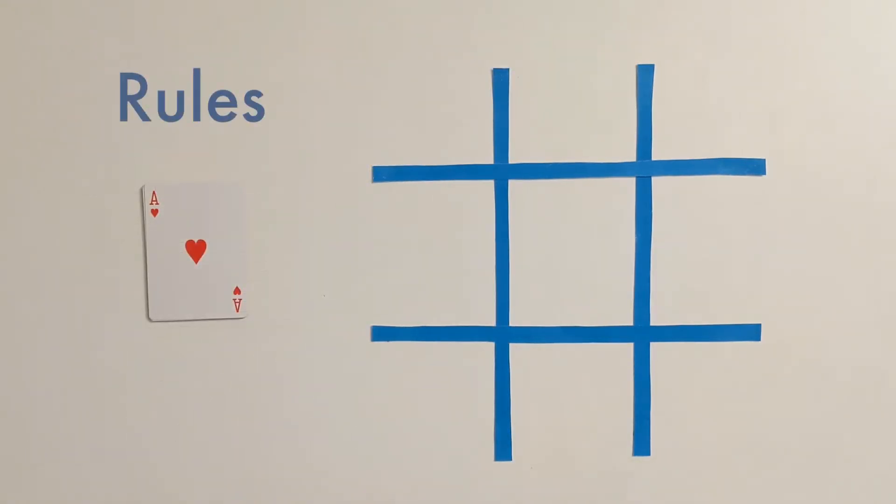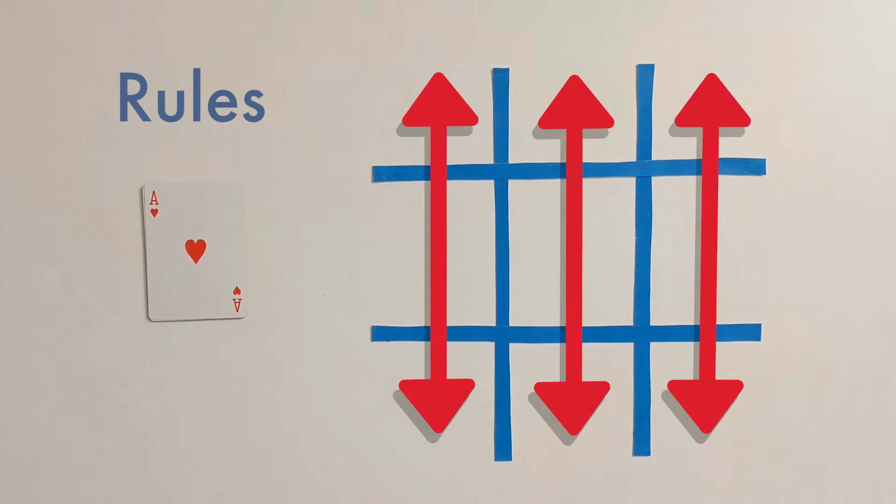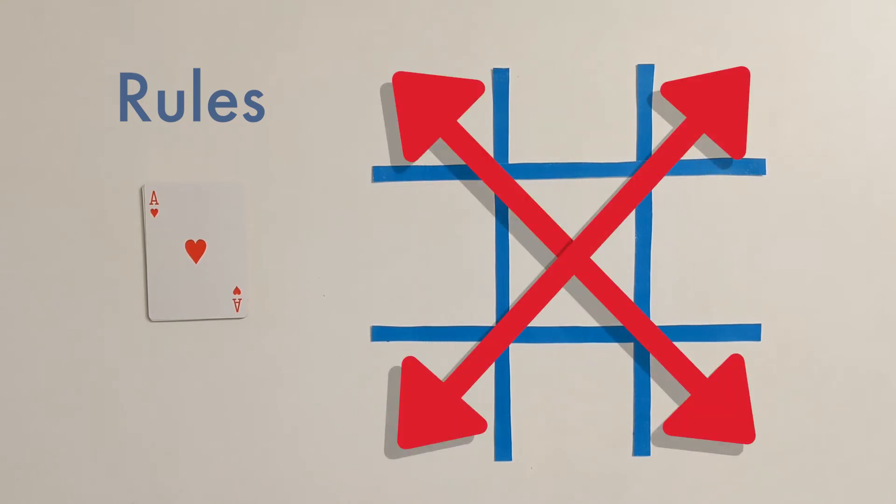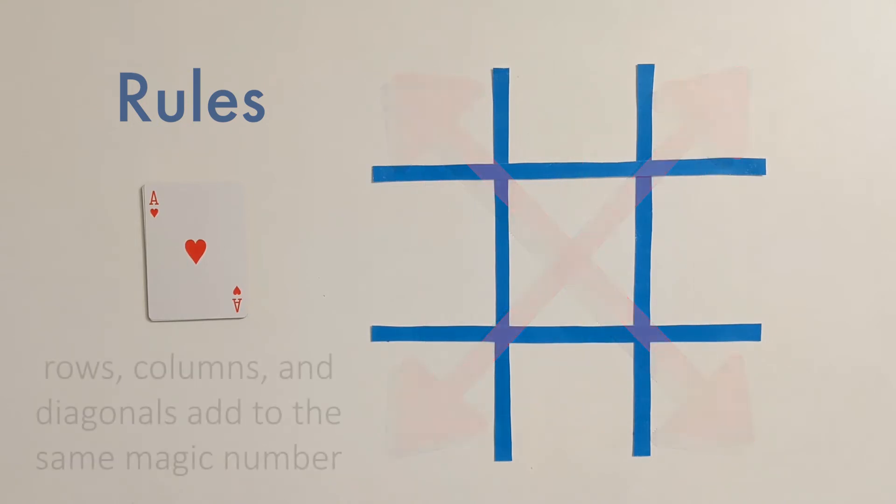Let's talk about some rules for this activity. We're going to be taking our numbers 1 through 9 and placing them in our 3x3 grid. We want to do this in such a way that every row, every column, and our two diagonals all add up to the same magic number.